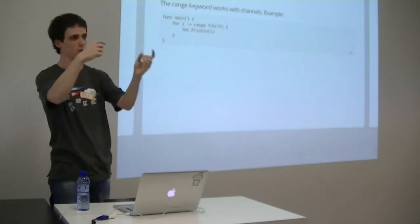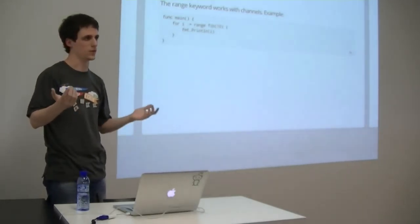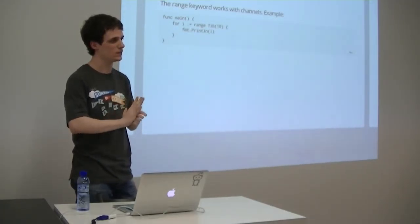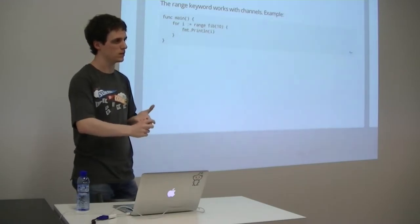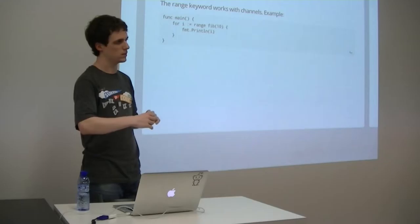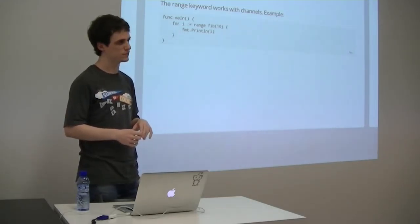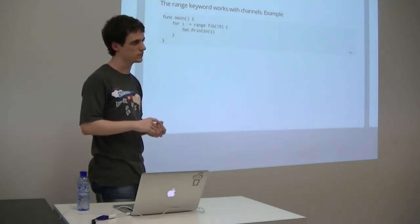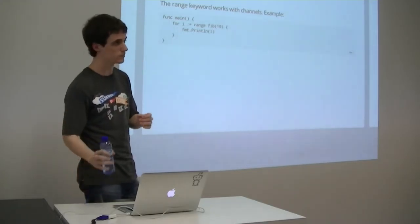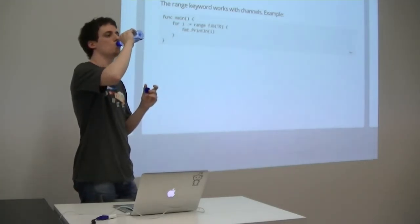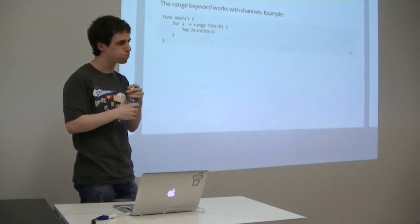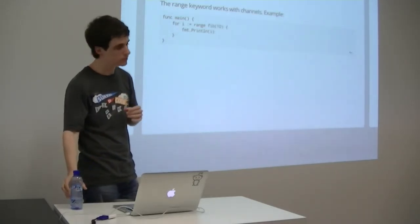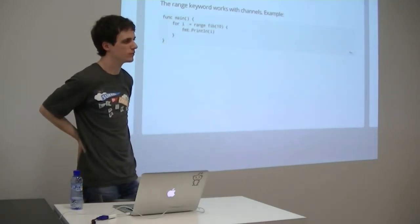A basic channel example: create a channel of integers, do work in an independent goroutine, then block to get the result. The goroutine sets the channel to 3; when the value is available, it's inferred as an integer and printf prints 3. Channels are typed — you can pass a channel of type 'interface{}' (the empty interface) to work around the strict typing. Channel scope follows the same uppercase/lowercase export rules as other identifiers.